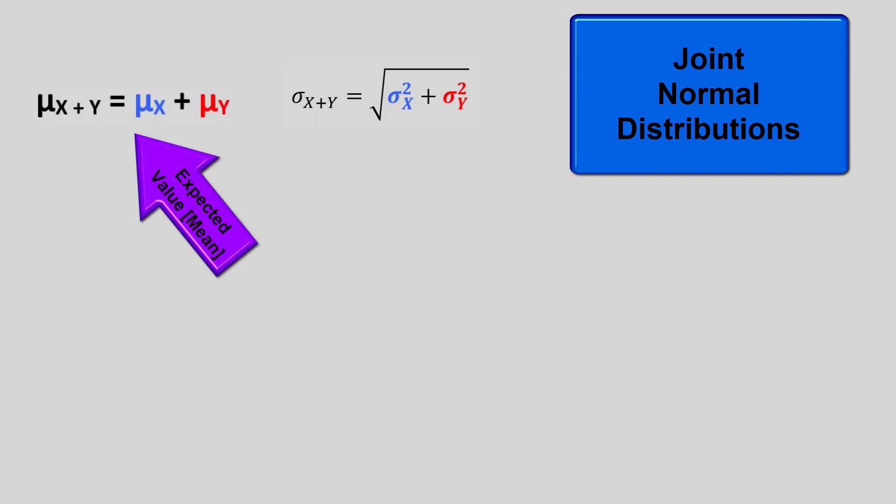Expected value, which is mean average, is found by adding the means or expected values together. For this, the variables do not have to be independent.